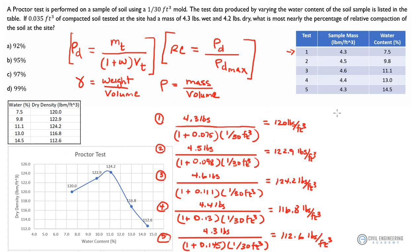We get our maximum dry density when the soil water content is 11.1%. Now how do we get at the relative compaction? We've got our dry density measured in the field — rho sub d field — and we're going to divide that by the maximum dry density we just discovered doing our proctor test, to figure out what the relative compaction of the soil is in the field. The field dry density equals the dry mass divided by the volume of the field sample.